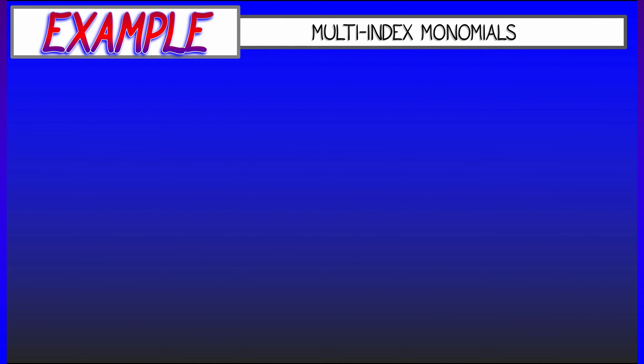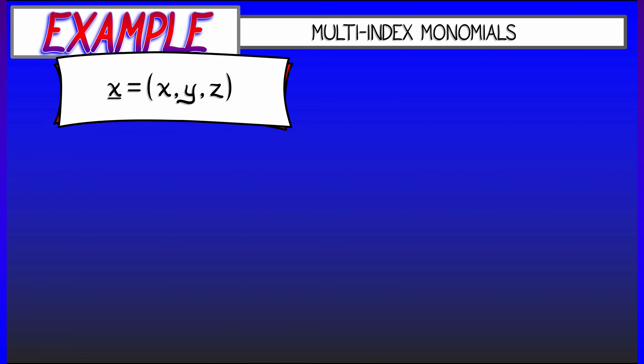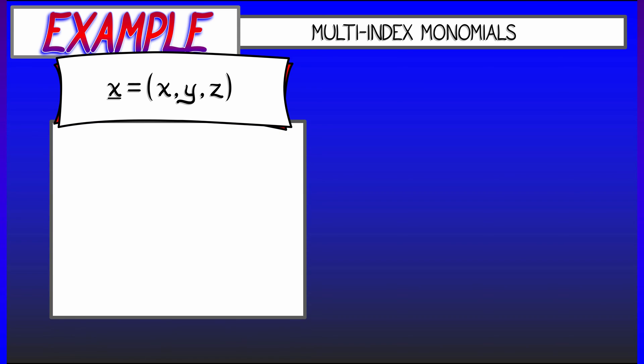Let's take a look at some examples of multi-index monomials. Let's say that x has just three variables, and instead of subscripts, let's just call them x, y, and z for clarity. Then, in this case, what is x to the (1, 2, 3)? Well, that's x to the 1, y to the 2, z to the 3. That's x, y squared, z cubed.